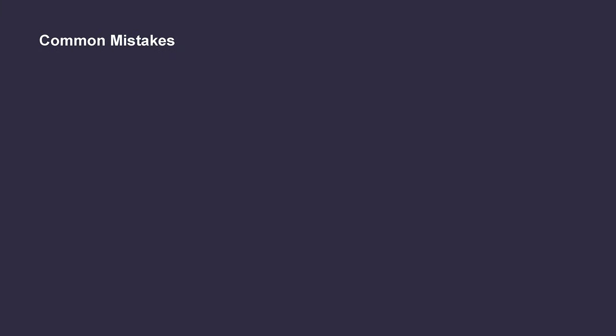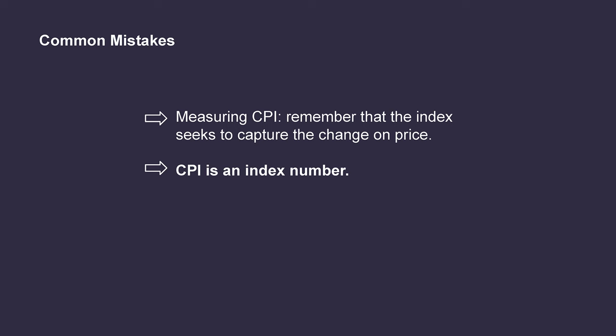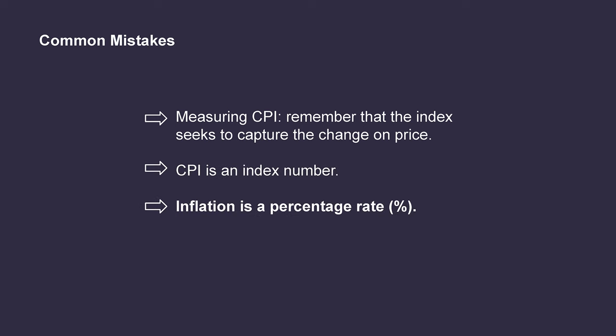What are the most common mistakes? Remember that when measuring the CPI, the index seeks to capture the change in price. Its aim is to analyze whether there is a change in prices, taking the same basket of goods as reference. Although this basket may change when prices rise or there could be updates, the idea is to find out whether purchasing power has decreased. Also, remember the expressions and their units of measure. CPI is an index number, expressed in whole numbers because it represents the evolution towards the base year. Inflation, on the other hand, is expressed as a percentage rate because it is a variation between two index numbers.